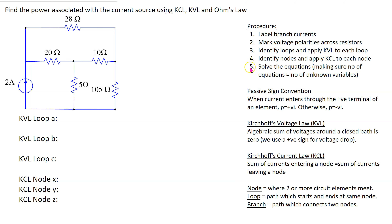The first step is to label branch currents. Recall that a branch is a path which connects two nodes. In this circuit, we have an independent current source in this branch, so the current in this branch has to be equal to 2 amps. We can start labeling the remaining branch currents: I1, I2, I3, I4, and the final remaining branch is I5.